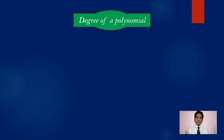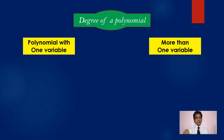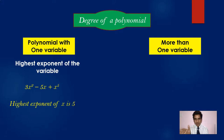Now let us discuss how to find the degree of a polynomial. When you have a polynomial with a single variable, the highest exponent of the variable gives the degree. For example, in 3x² minus 5x plus x⁵, the variable is x and the highest exponent is 5, so the degree of the polynomial is 5.